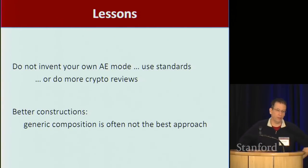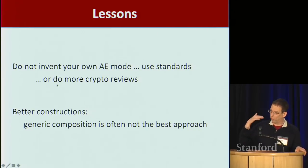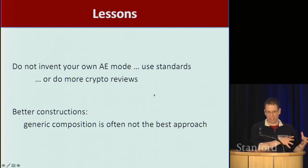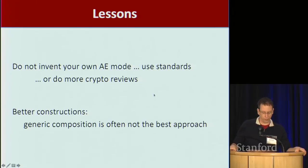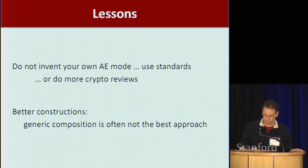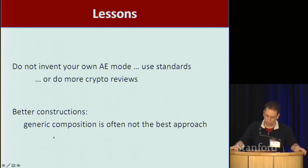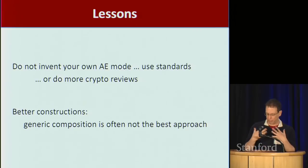So what are the lessons in all this? Basically, inventing crypto modes is tricky. There are lots of ways to get it wrong. In the second decade of the 21st century, I would hope we not make mistakes like this. We need more crypto reviews and should try to stick to standards, because those standards have been vetted well. The bottom line, as usual: inventing your own crypto modes is a tricky business. And in most cases, these generic composition results are not the best ones to use — there typically are better modes available if you understand your problem better and can come up with better constructions than generic composition.